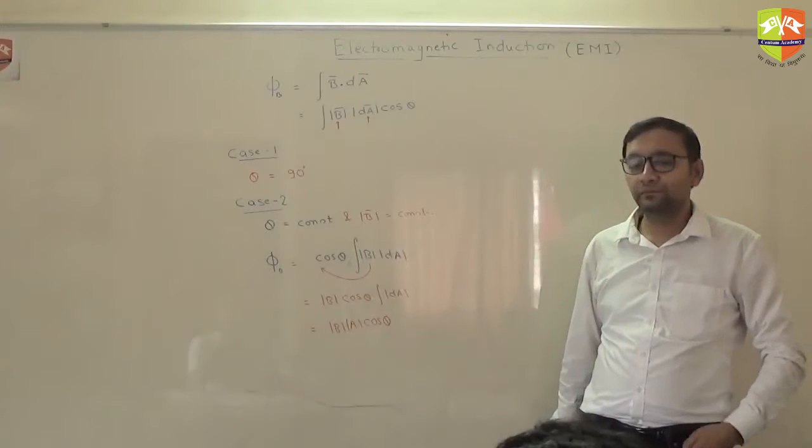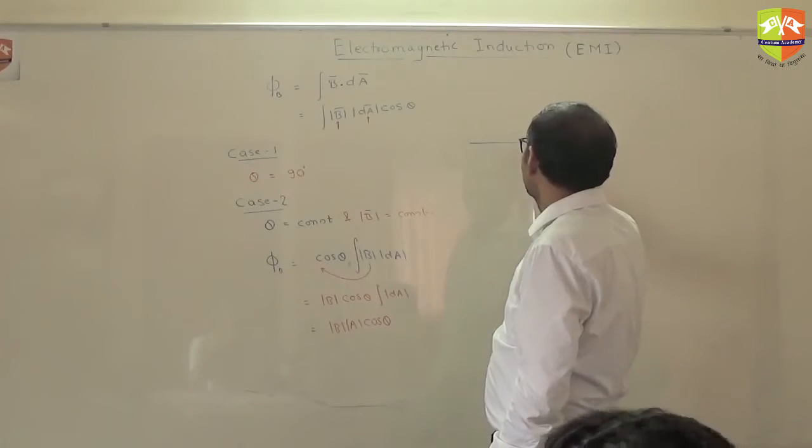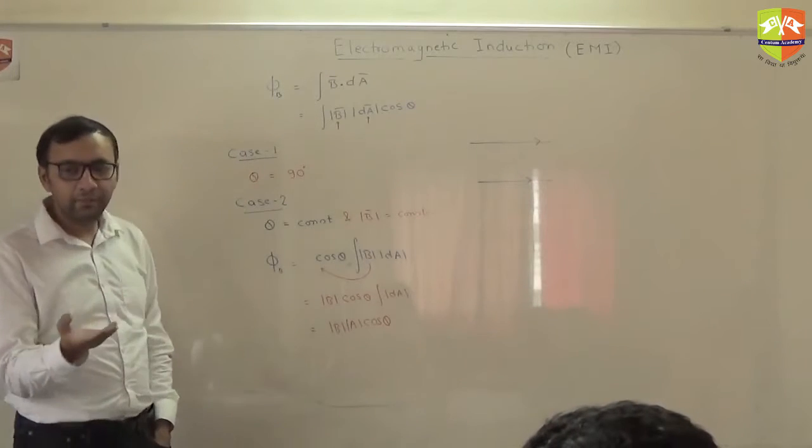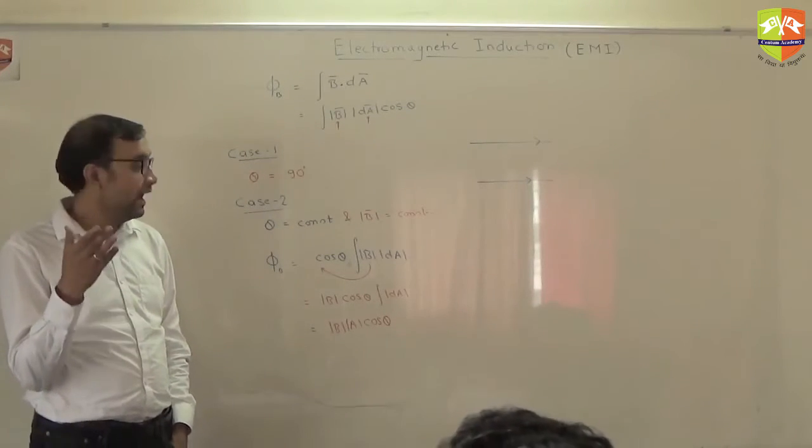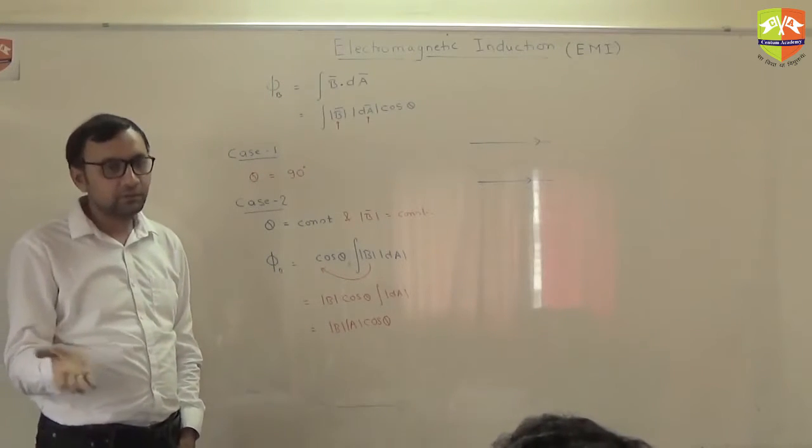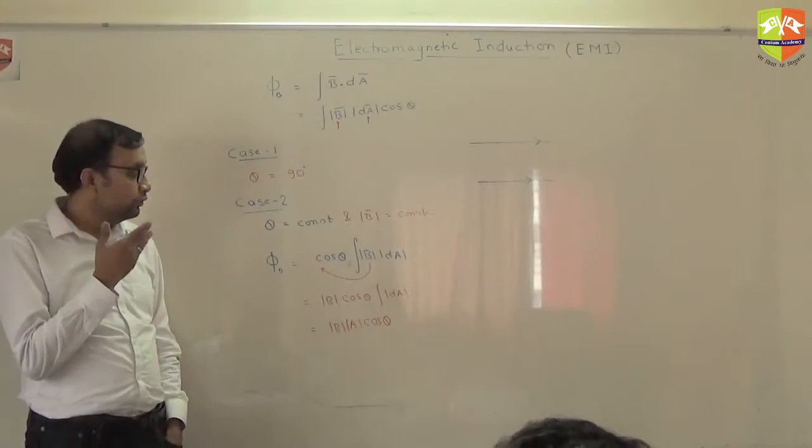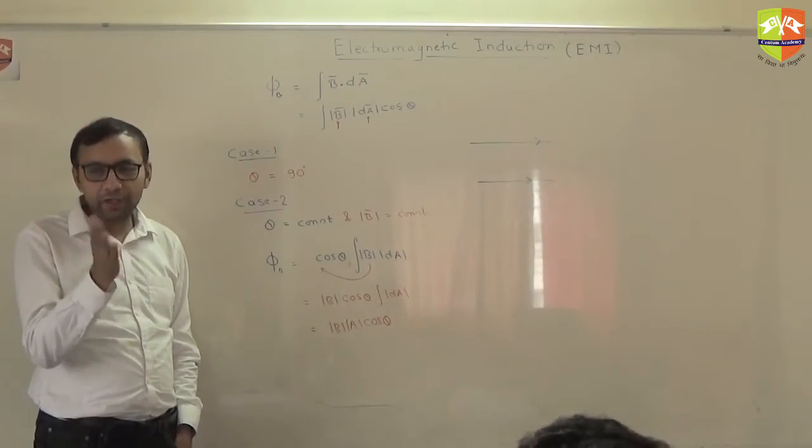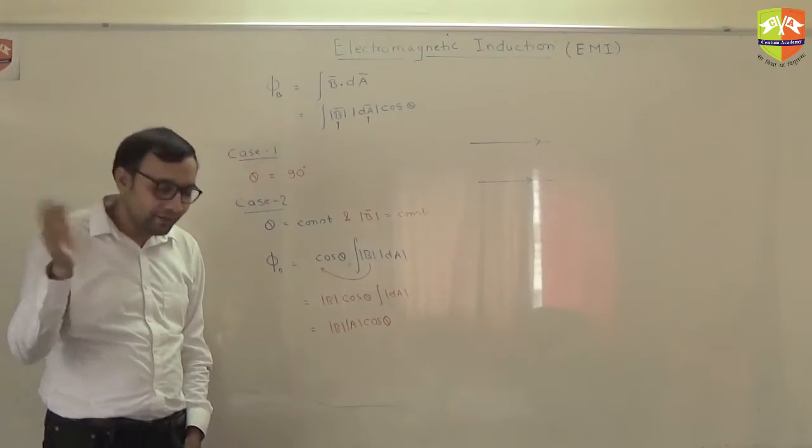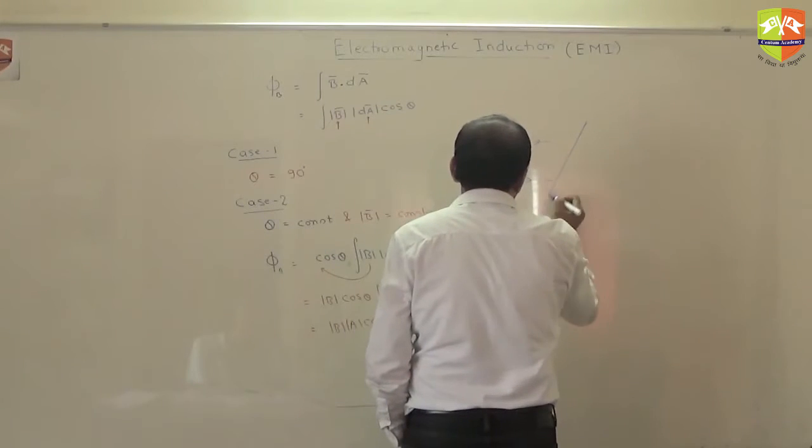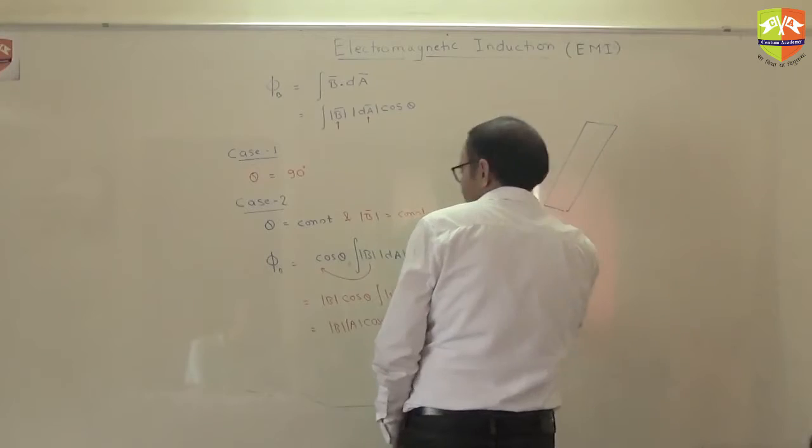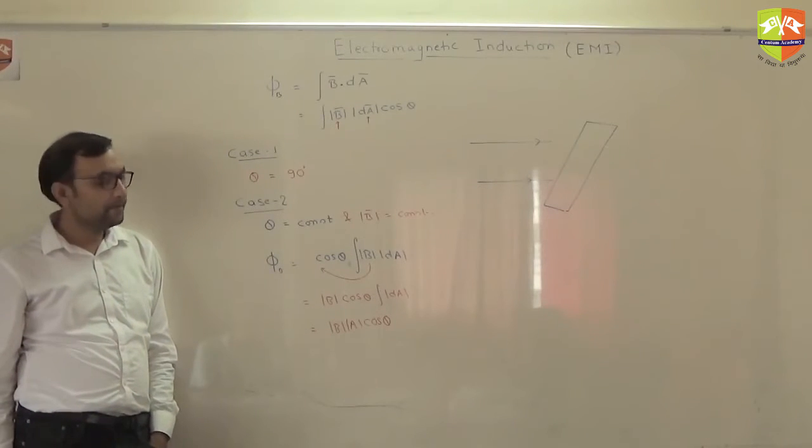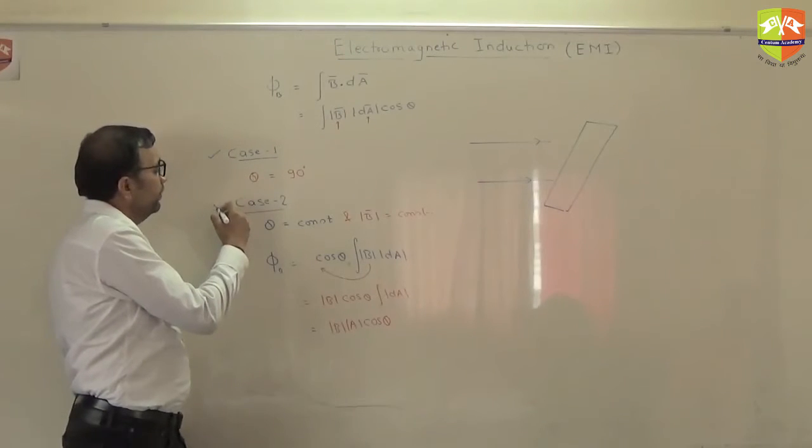Fine. When θ will be constant? Tell me if magnetic field direction is fixed, when θ will be constant? θ is what, angle between area of the loop and magnetic field. The area of the loop will be perpendicular to the loop surface, right? So when that will happen when θ will be constant? When area vector is constant. Because if area vector also keep on changing its direction then θ will be changing and when θ will be constant when it is a planar surface. In the surface which is plain, then area vector will be direction of area vector will be constant. Getting it?